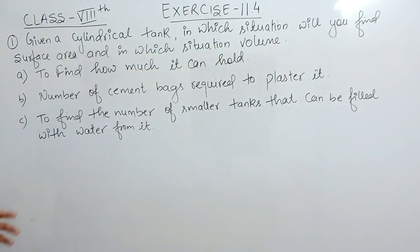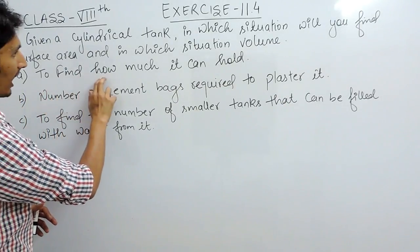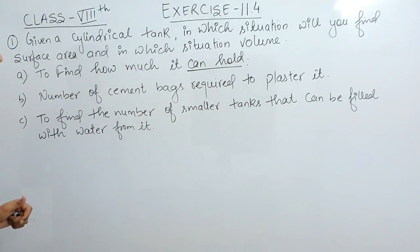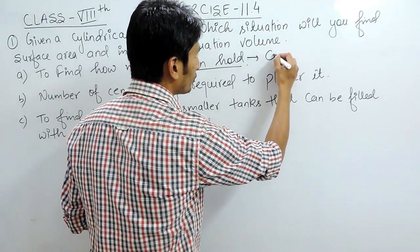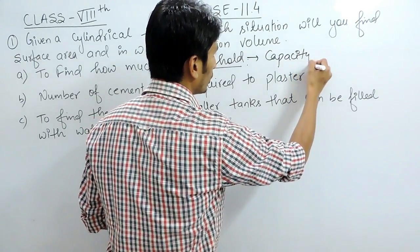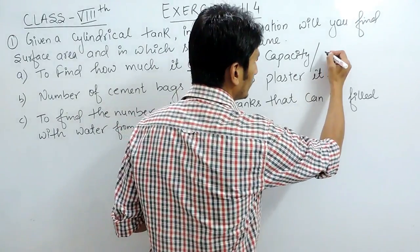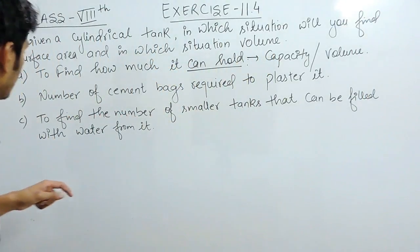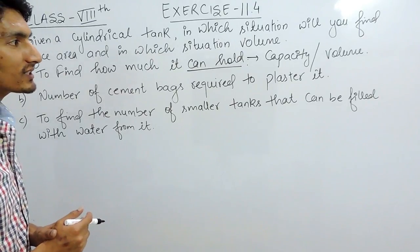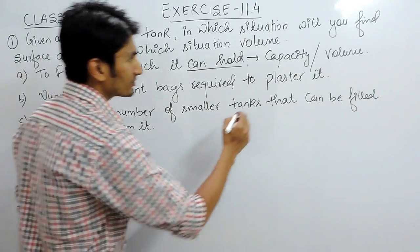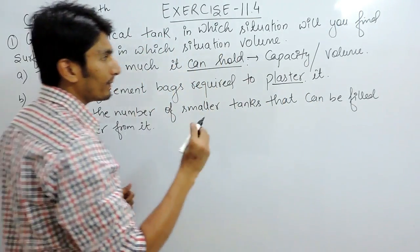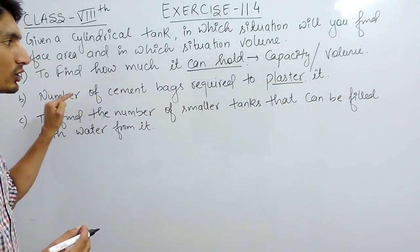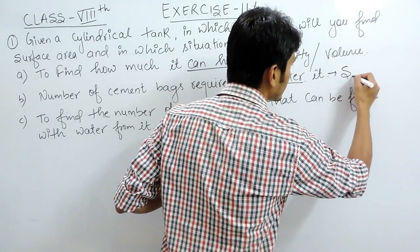Now let's find in which case we will find surface area and in which case volume. In the first case, you are given a cylindrical tank and you have to find how much it can hold — clearly this is about capacity, so we have to find its volume. In the second case, you have to find the number of cement bags required to plaster it — when we are plastering the cylindrical tank we are plastering only its surface, so in this case we would be finding its surface area.